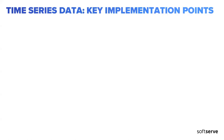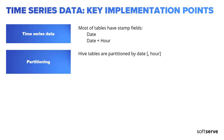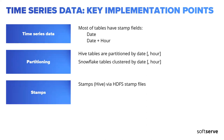To implement a time series database, most of our tables must have fields like date or date-and-hour. Hive tables must also be partitioned by date or date-and-hour. If we are using Snowflake, the data should be clustered by date or by date-and-hour. We are also using stamps — a label that shows us when reporting data for a specific period of time is ready. Stamps in Hive are just regular files in HDFS.